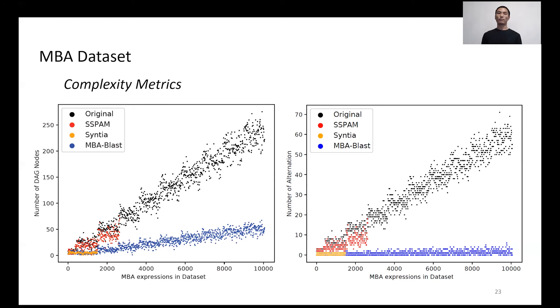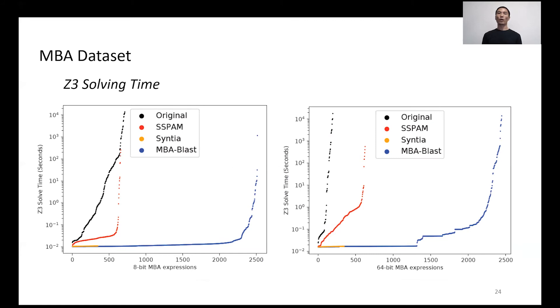Moreover, we recorded SMT solving times when performing correctness testing. Compared to others, the density of the blue curve shows MBA-BLAST covers all samples in the dataset. That means considerable MBA samples were not solved before MBA-BLAST simplification, but they can be solved very quickly after MBA-BLAST simplification.